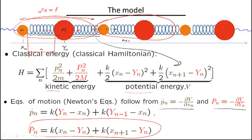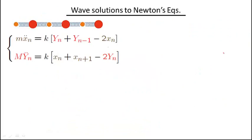The goal is to solve these equations. It's an infinite chain of equations because n goes from minus infinity to plus infinity — an infinite system of coupled differential equations. Naively, we could say it's hopeless. But it turns out that using a combination of a powerful mathematical method — the Fourier transform — and a reasonable physical guess, we can solve the problem in a few relatively straightforward steps.